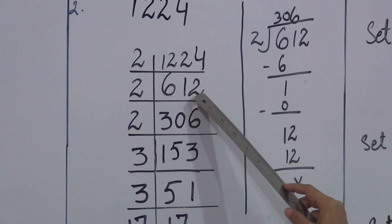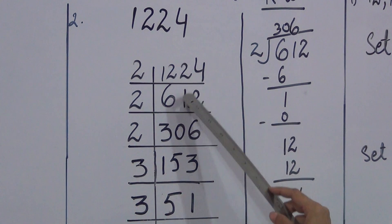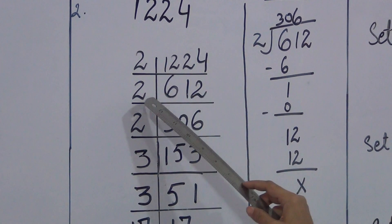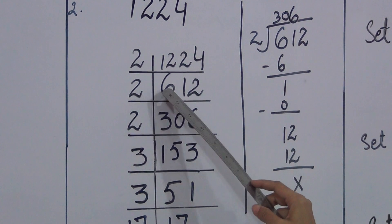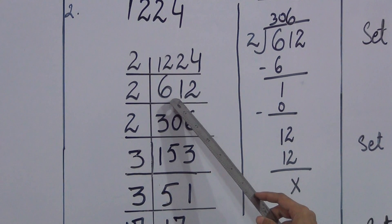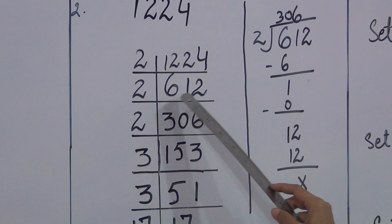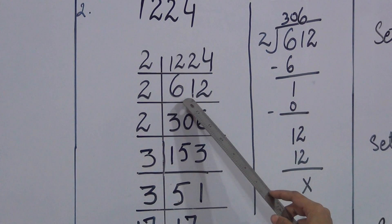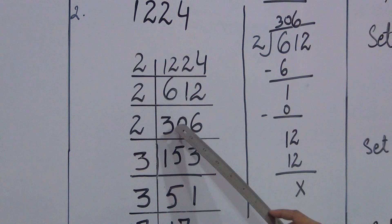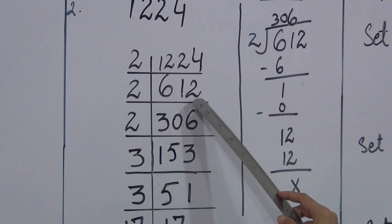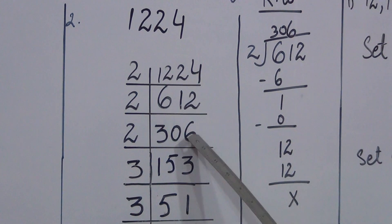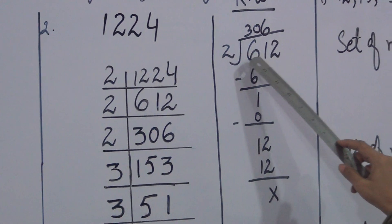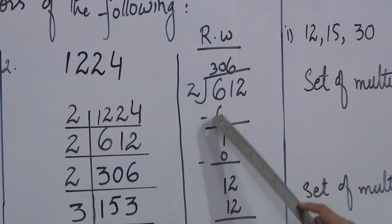Now divide 612. The last digit of 612 is 2, so it is also an even number and can be divided by 2 again. When we divide 612 by 2: the first digit 6 divided by 2 is 3. The next digit 1 is less than 2, so we combine it with the next digit to make 12. 2 times 6 is 12. So 612 ÷ 2 = 306.